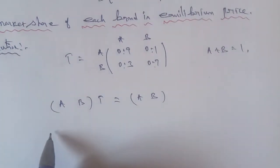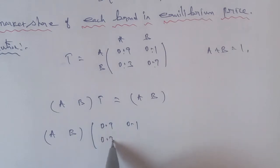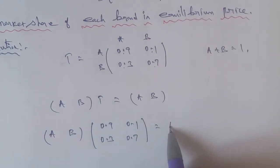So, (A, B) times the given transition matrix 0.9, 0.1, 0.3, 0.7 equals (A, B).